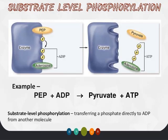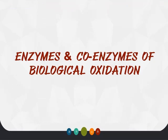For example, PEP plus ADP generates pyruvate and ATP. The energy for this reaction is obtained from the substrate PEP — this is an example of substrate-level phosphorylation.